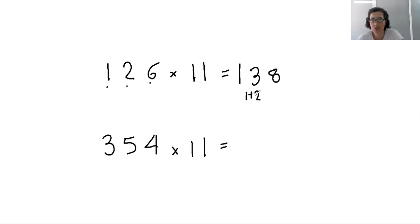This is 1 plus 2. This is 2 plus 6. So we've done the sum of the first digit, first and second digit, second and third digit. And now we only do the last digit, which is 6. Let's see this one. So the answer of 126 times 11 is 1386.